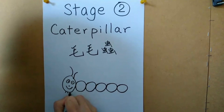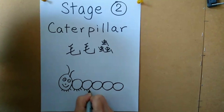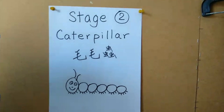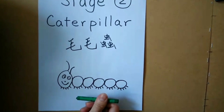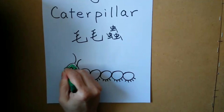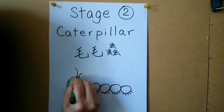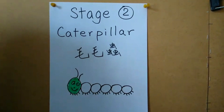還有腳腳喔。See a lot of feet, huh? All right. Don't forget, I have the color, OK? What color is it? Green. 好。就像這樣子。